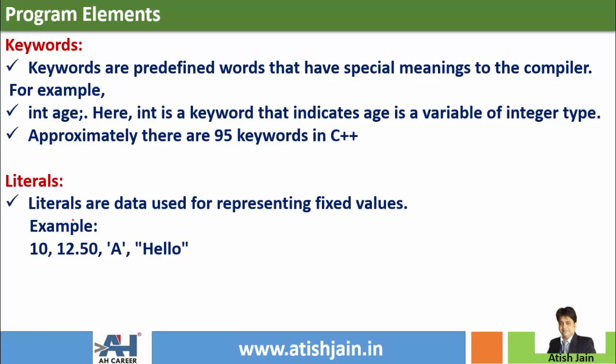Keywords are the predefined words that have special meaning to the compiler. For example, if you write int age, int is a keyword that indicates that age is a variable of integer type. Age is a variable name. Int is a data type. Every keyword may not be a data type, but every data type is a keyword. Approximately there are 95 keywords in C++.